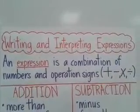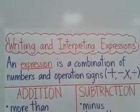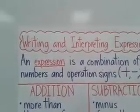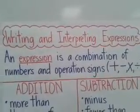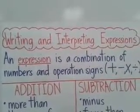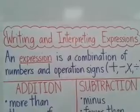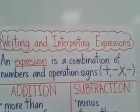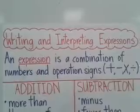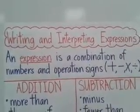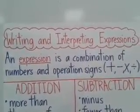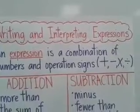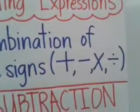Let's start with a vocabulary word. The vocabulary word is 'expression.' Go ahead and read that with me: an expression is a combination of numbers and operation signs. Let's read that again — an expression is a combination of numbers and operation signs.